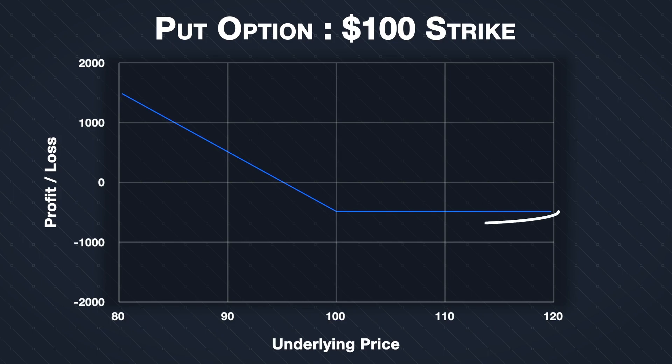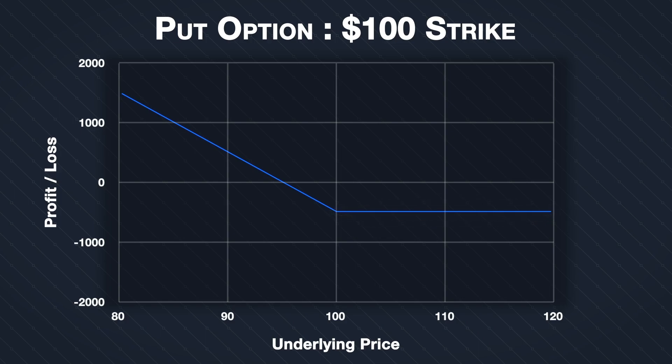Buying a put option has a fixed risk — the maximum amount a trader can lose is the premium they pay for the option. Let's look at how the profit or loss of a put option compares to shorting the underlying asset.